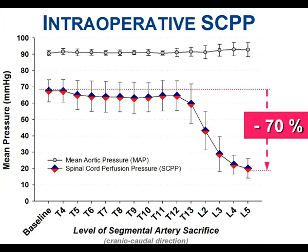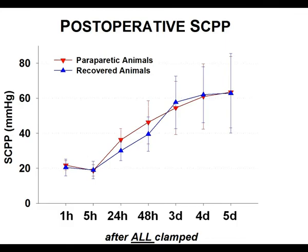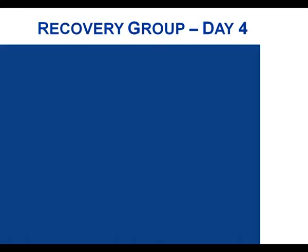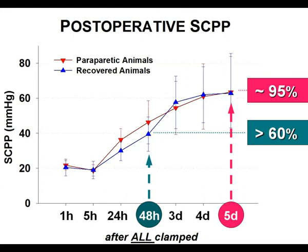During complete craniocaudal segmental artery sacrifice, SCPP drops from a baseline of about 70 mmHg by 70% down to about 20 mmHg in all animals, even though systemic pressures were perfectly stable. Most interestingly, SCPP recovers postoperatively even without any segmental arteries: it begins to rise within 24 hours, recovers to 60% at 48 hours, and to almost 100% five days after segmental artery sacrifice.